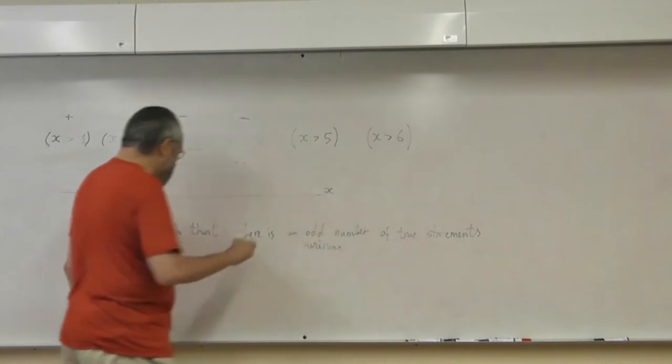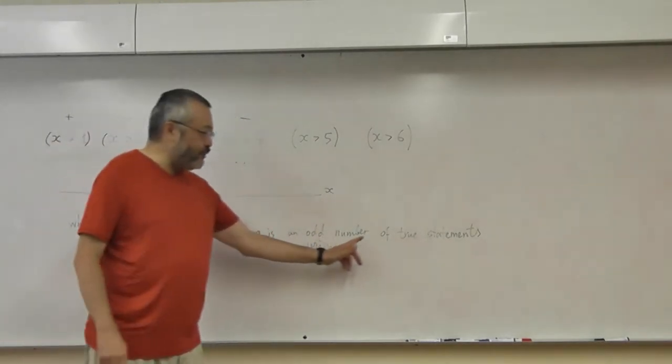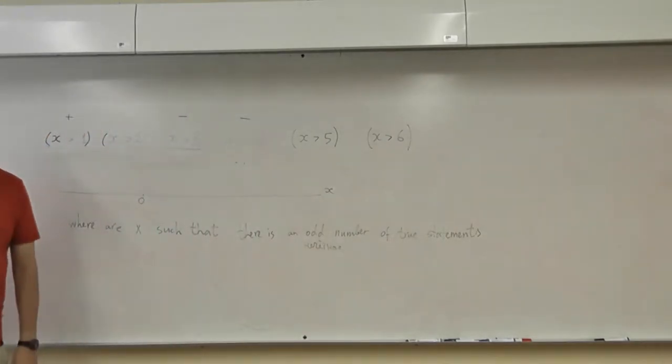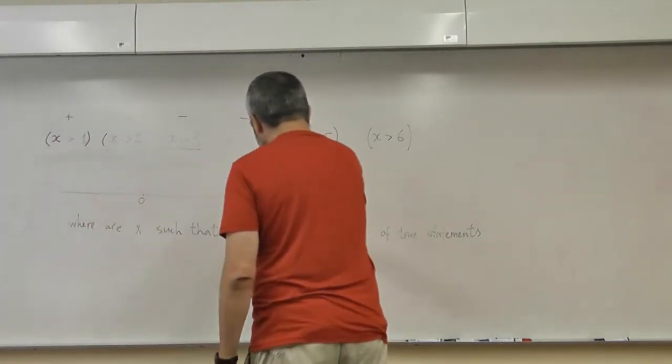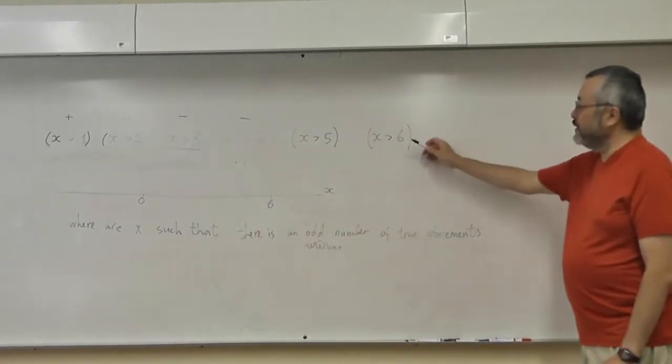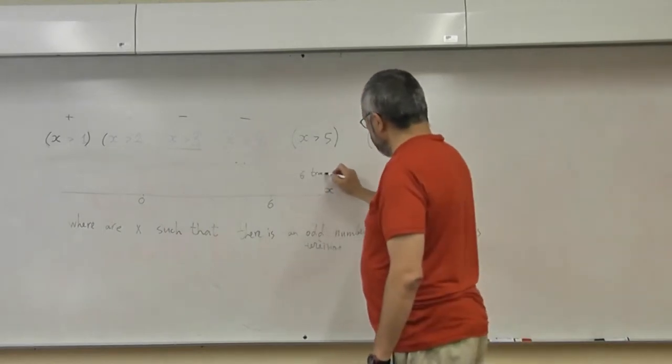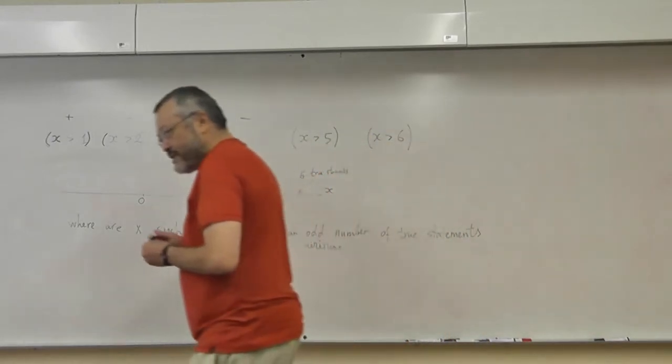So the question is, where are x's when there is an odd number of true statements? Can somebody draw it on a board? For example, if x is greater than 6, then all statements are true. There are six true statements. So this part doesn't work for us.